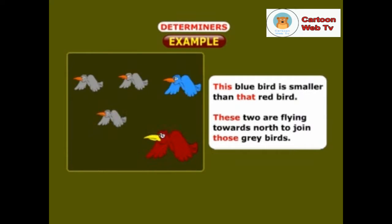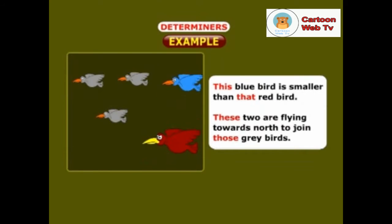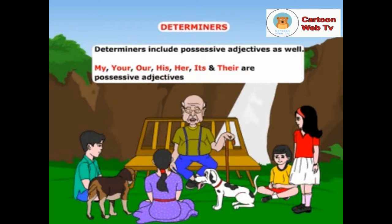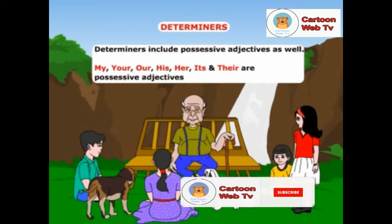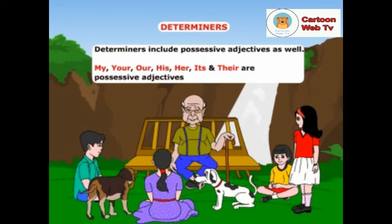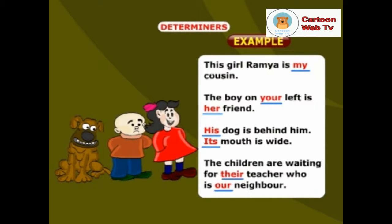These two are flying towards north to join those grey birds. Determiners include possessive adjectives as well. My, your, our, his, her, its and their are possessive adjectives. In this example, the underlined ones are possessive adjectives: this girl Ramya is my cousin. The boy on your left is her friend. His dog is behind him. Its mouth is wide. The children are waiting for their teacher who is our neighbour.